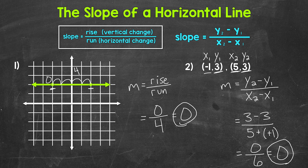A slope of zero tells us we have a horizontal line. Looking at the coordinates, we can see we have the same y-coordinate: three and three. So there's no vertical change between these two points — this is a horizontal line. There's the slope of any horizontal line. Let's move on to vertical lines.